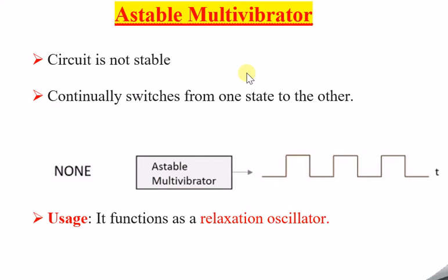So what is an astable multivibrator? As the name itself indicates, 'a' means 'not' — so astable means not stable. There is no stable state. 'Stable' means there is stability in any state or value — that is called stable. In the case of astable, it is the opposite of stable, meaning there is no stable state at all for the circuitry. A multivibrator which is not having any stable state is called an astable multivibrator.